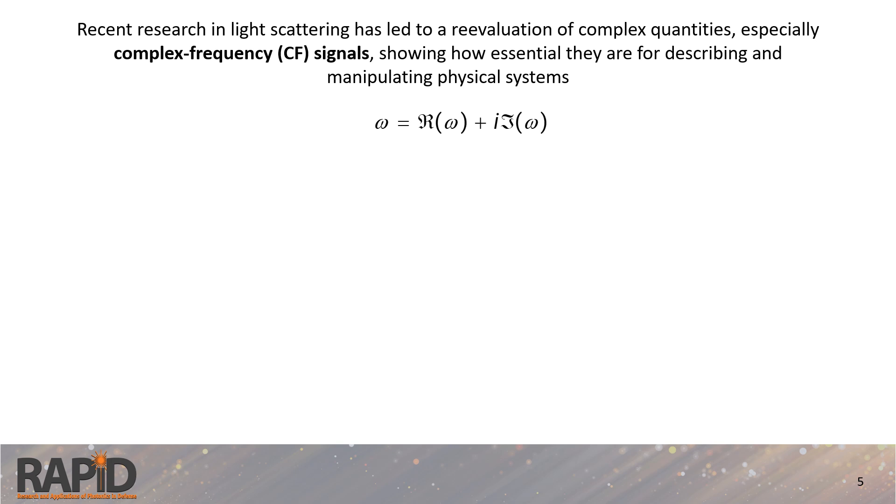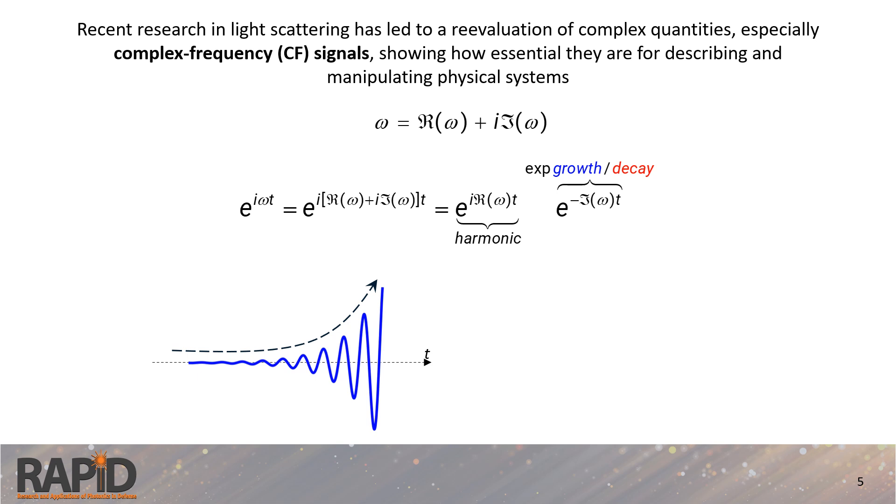To illustrate this, let's consider a frequency omega extended into the complex frequency plane. Here the frequency is seen as having two components: the real frequency, which depends on the traditional harmonic part, and the imaginary frequency. When we substitute this complex frequency into the harmonic signal, represented by e to the power of i omega t, the result is a harmonic function with an amplitude that either exponentially grows or decays depending on the sign of the imaginary part of the frequency.